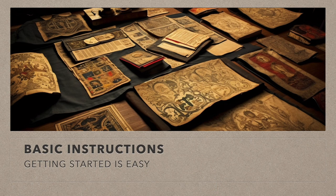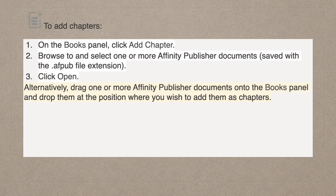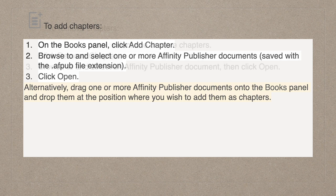The basic instructions for getting started are quite easy. To create a book, do one of the following: select File > New Book, or if the Books panel is visible, click Create Book on the panel (available if no books are open), or select New Book from the panel preferences menu. On the Books panel, click Add Chapter. Browse to and select one or more Affinity Publisher documents saved with the AFPub file extension, and click Open. Alternatively, drag one or more Affinity Publisher documents onto the Books panel and drop them at the position where you wish to add them as chapters. Note: the Books panel is not visible by default — go to the Window menu and click to make Books visible.